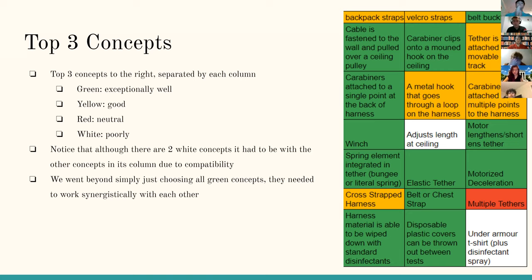So you can see separated by each column, we have concept one on the furthest to the left, concept two in the middle, and concept three all the way on the right. For the color coding system, you can see that the green concepts specifically did exceptionally well. Yellow did good, red did neutral, and white did poorly.